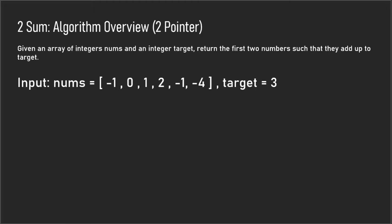Let's take a step back. Instead of looking for three numbers that add up to a target, let's just look at two. We're given an input nums array and we're supposed to find two numbers that add up to a target. What we can do to find that is use the two-pointer algorithm.